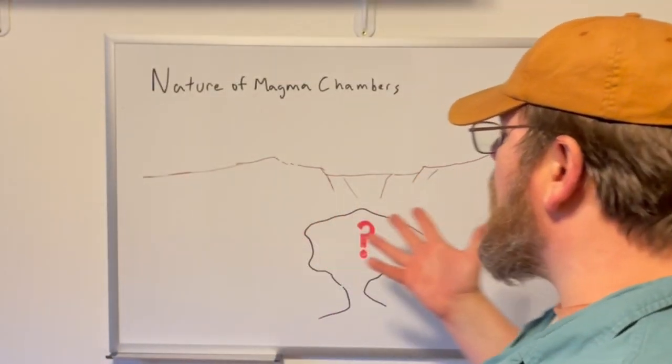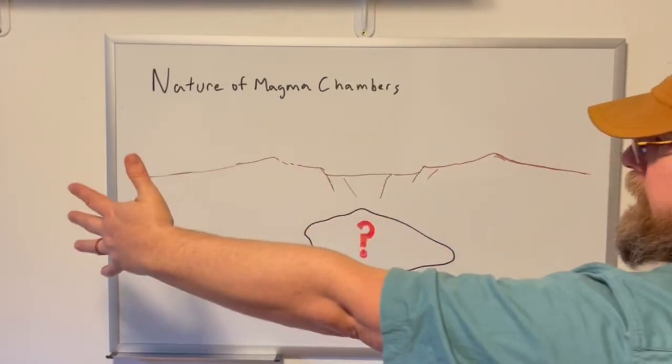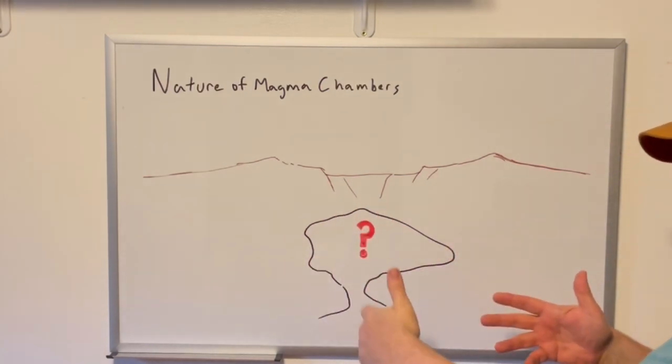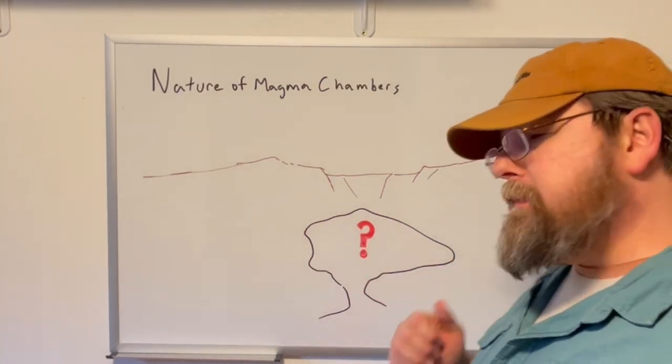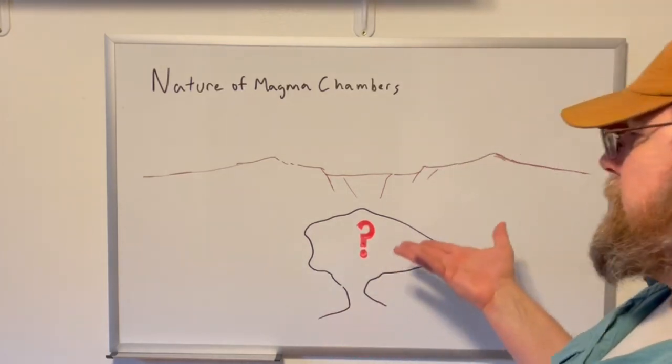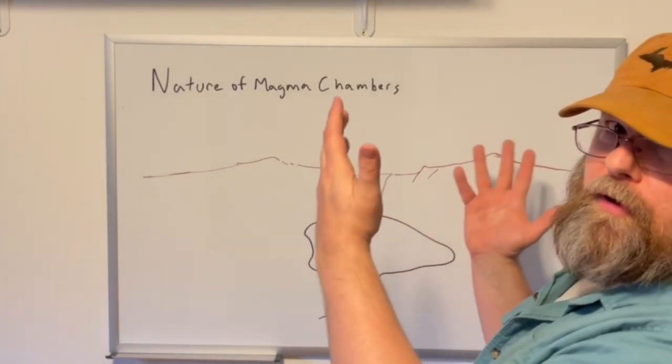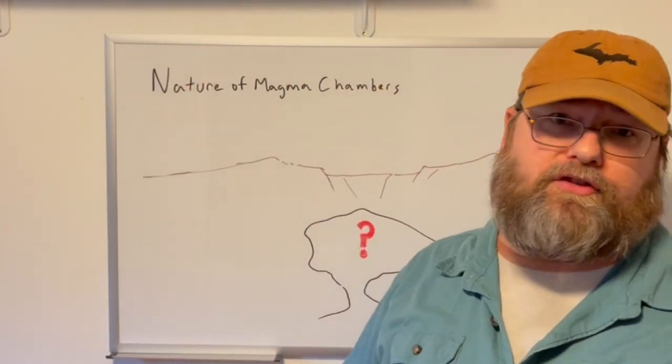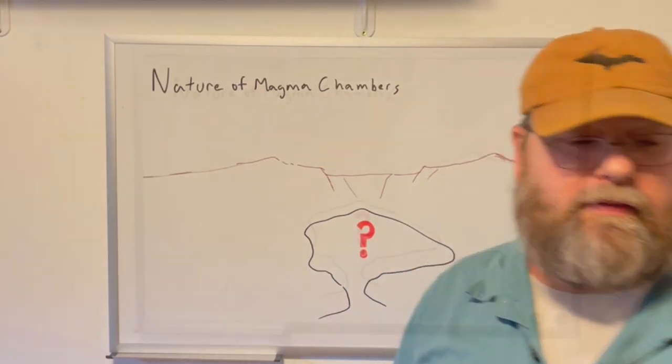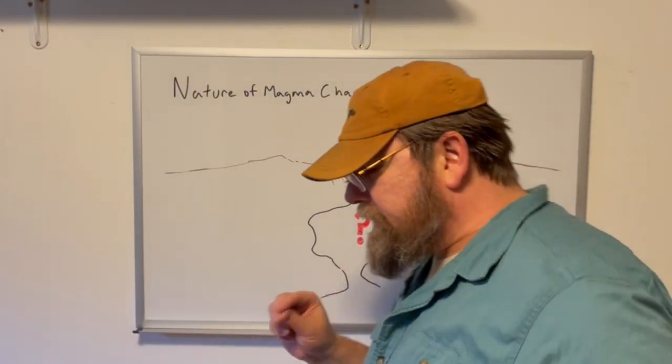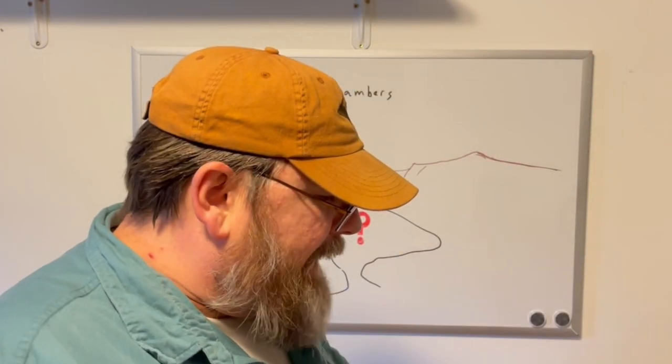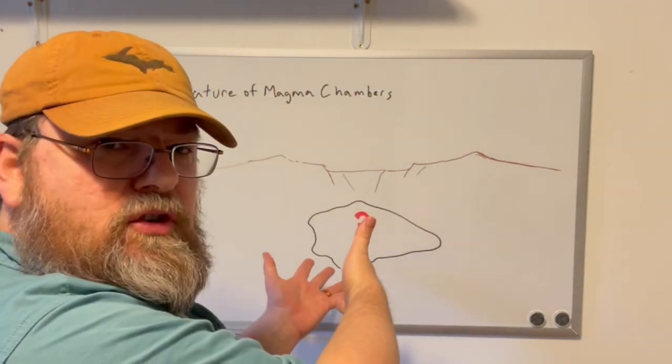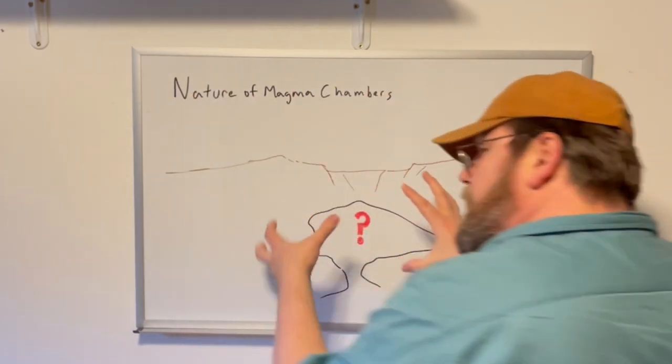Here I've drawn a Yellowstone-type caldera in cross-section, not to scale. And down here I have our magma chamber with a question mark. What I'm trying to address is the nature of this thing, the nature of this magma chamber. How does this work?